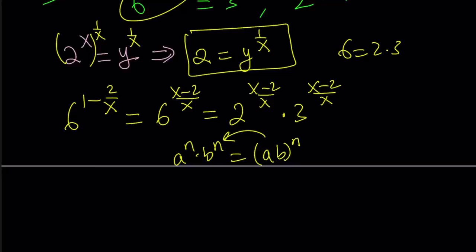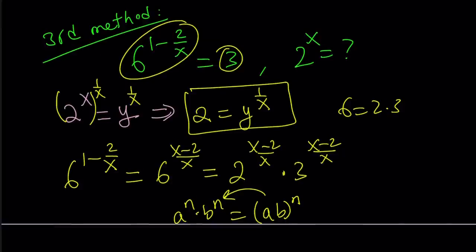Now, 6 to the power 1 minus 2 over x is equal to 3. We know that, right? It's given. So this is equal to 3. Nice. So that is the critical part.